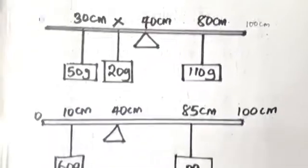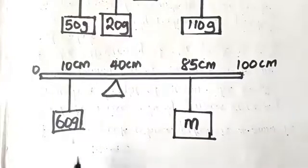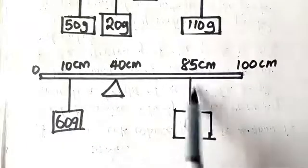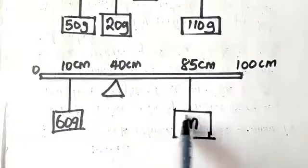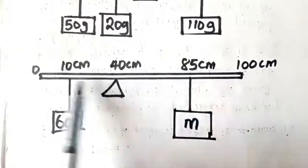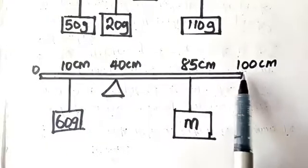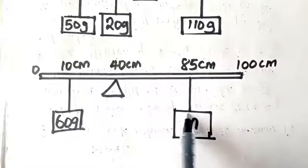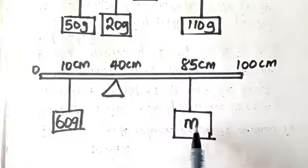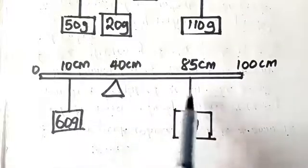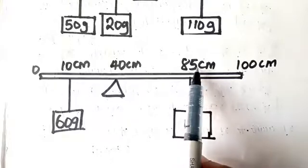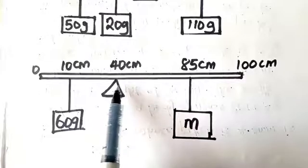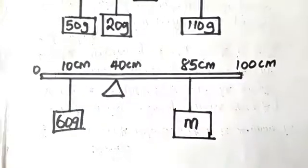We also have another case where 60 grams is hung at the 10 centimeter mark, and another mass — which is unknown — was hung at the 85 centimeter mark, for a meter rule of full length 100 centimeters. We are asked to find the value of this weight that will balance the 60 grams if it is hung at 85 cm mark and the balance point is at 40 centimeter mark.